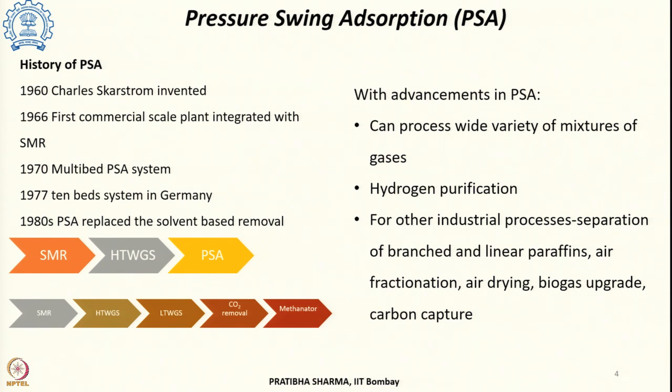There could be plant sizes which can be small, even 30 normal meter cube per hour, to plants reported at 265,000 normal meter cube per hour or 4 lakh normal meter cube per hour.